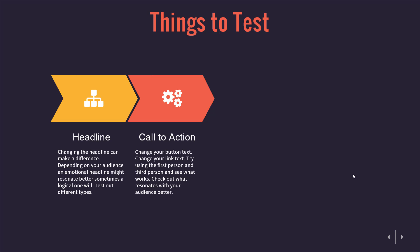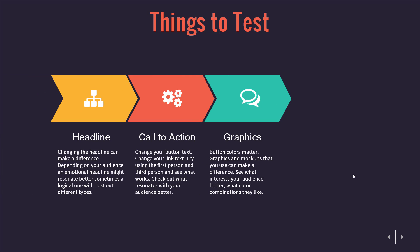Your call to action is another element to test. You could change the button text, change the text around the buttons, change some graphics around the buttons, put in some arrows pointing to the buttons. Change the call to action, change the link text, try first person, try third person — see which works. It's always about what resonates better with your audience.